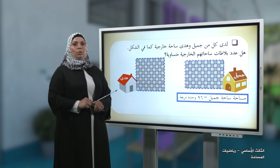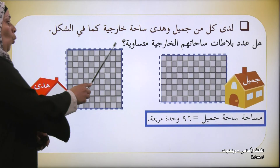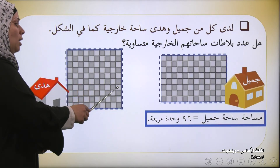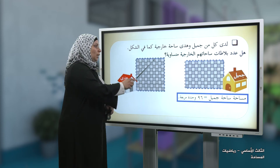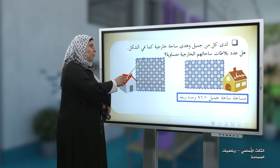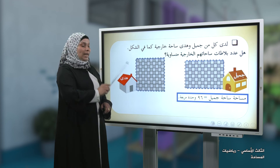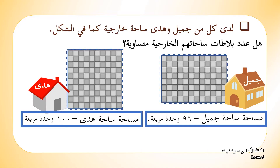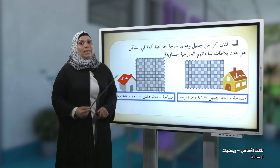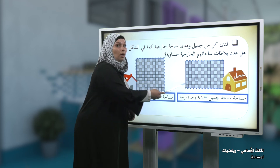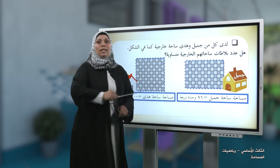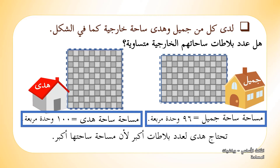لنذهب لساحة هدى ونقوم بعد البلاطات: 1، 2، 3، 4، 5، 6، 7، 8، 9، 10 في كل صف. عشر وعشرون وثلاثون وأربعون وخمسون وستون وسبعون وثمانون وتسعون ومئة. إذن مساحة ساحة هدى مئة وحدة مربعة. نستنتج أن هدى تحتاج عدد بلاطات أكبر لأن مساحة ساحتها أكبر.